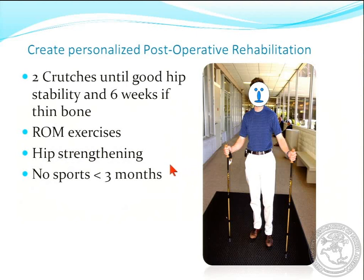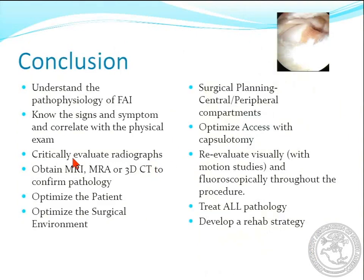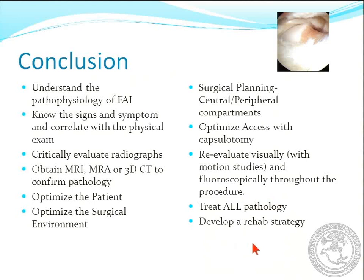In conclusion, really understand all the pathology of FAI, know the signs and symptoms, and critically evaluate all of your studies. Try to optimize your patient and your surgical environment — it'll make it a lot easier. Do your surgical planning just like you would with any other operation. Optimize your access with capsulotomy if you need it, and reevaluate what you've done fluoroscopically after you've looked at it visually. Treat all the pathology and develop a rational rehabilitation strategy. Thank you very much.